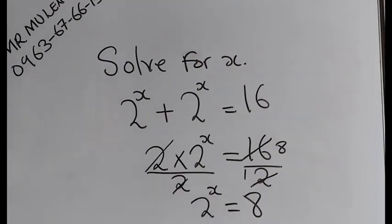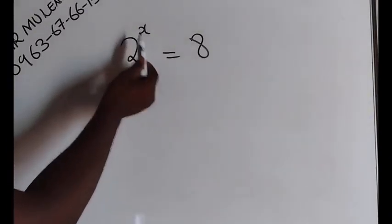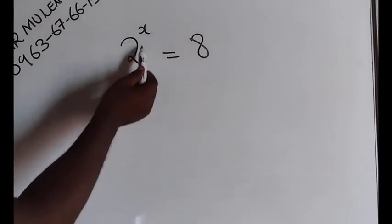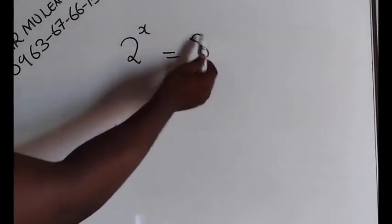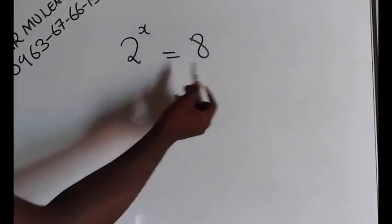What are we going to do now? How can we find the value of x? We have 2 to the power of x is equal to 8. The base is 2. Here, we've got the base of 8. So what are we going to do?